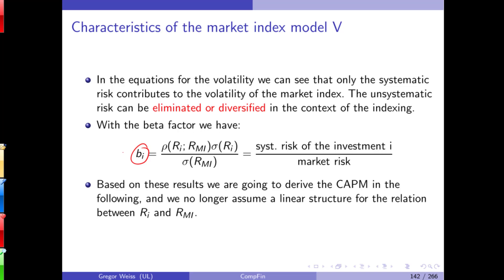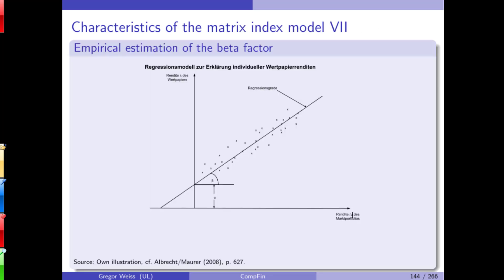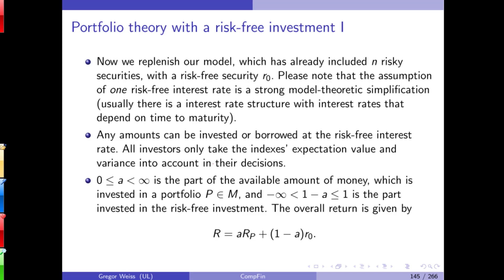Beta can be expressed as the systematic risk of investment i divided by market risk. This leads to the CAPM. The notation is identical to ordinary least squares linear regression — and this is no coincidence, because you estimate it by drawing a scatter plot with the market portfolio return on one axis and the individual asset return on the other, fitting a linear regression whose intercept is alpha and whose slope is beta.